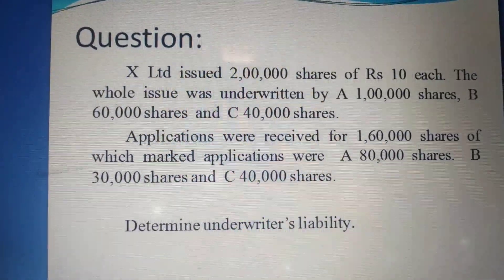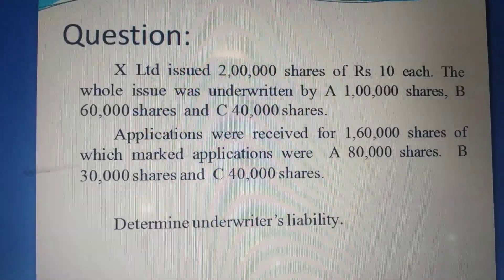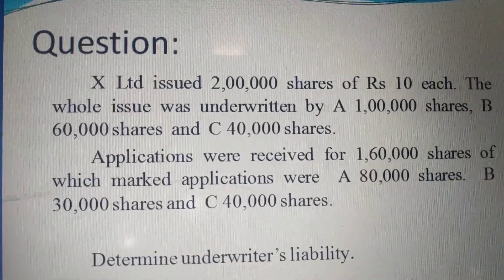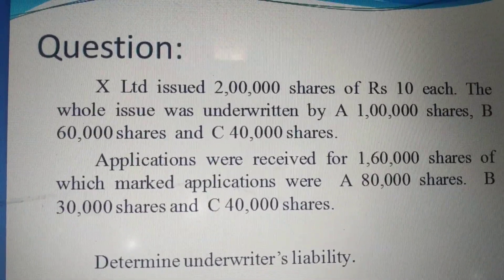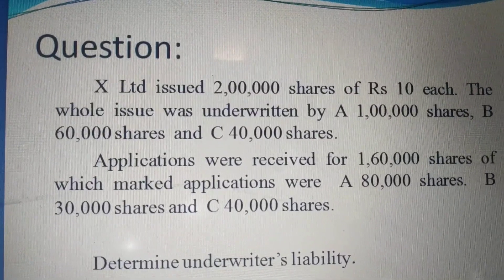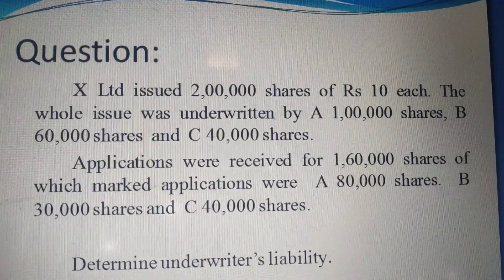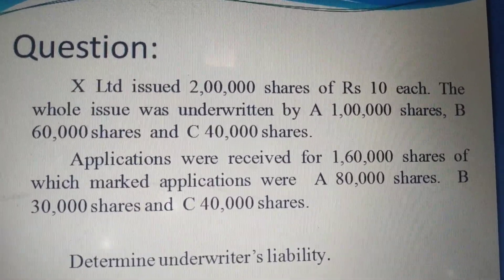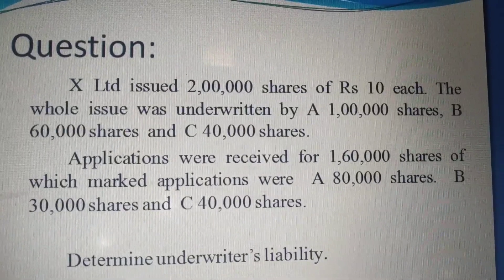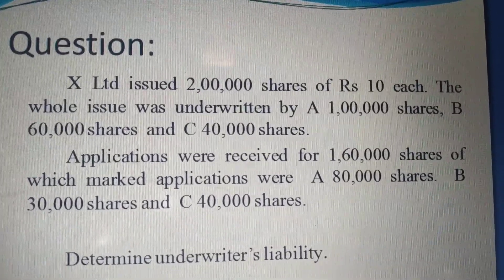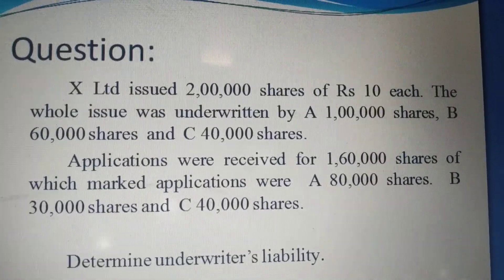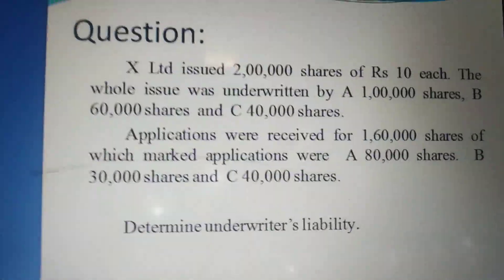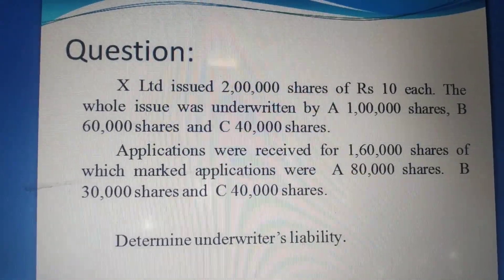X Limited issues 2 lakh shares of rupees 10 each. The whole issue was underwritten by A for 1 lakh shares, B for 60,000 shares, and C for 40,000 shares. A has agreed to sell 1 lakh shares to the public, B has agreed to sell 60,000 shares, and C has agreed to underwrite 40,000 shares to the public on behalf of the company.